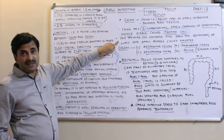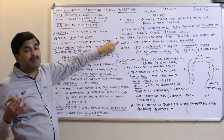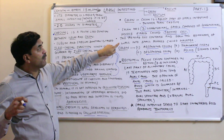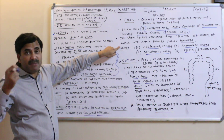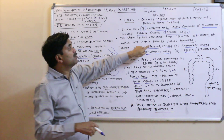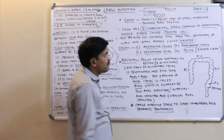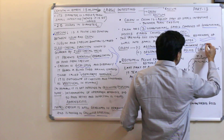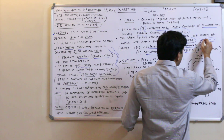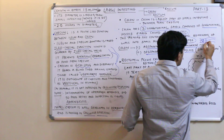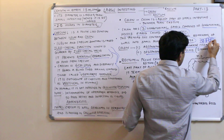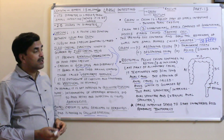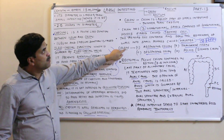The taeniae coli — these longitudinal muscle fibers — contract and draw the remainder of the wall of the colon into small pouches. These small pouches are called haustra.